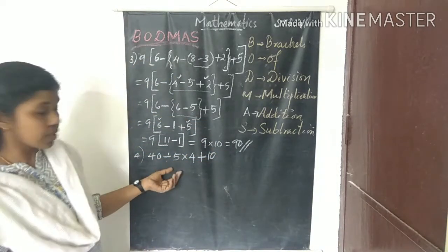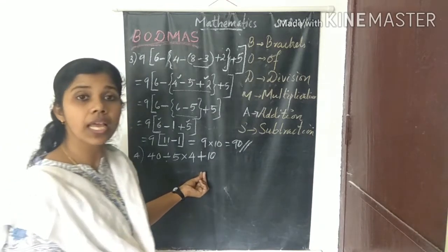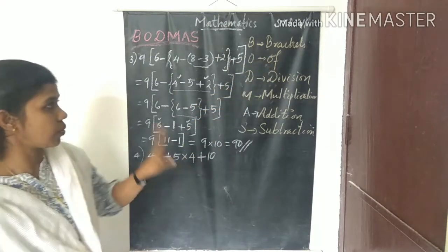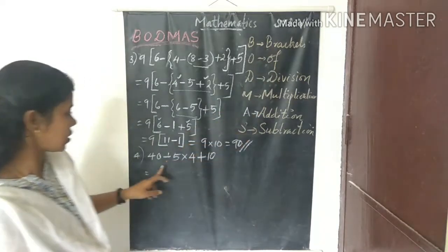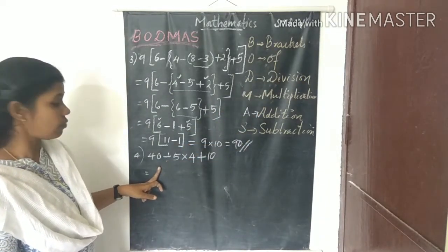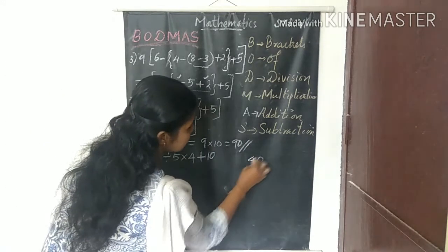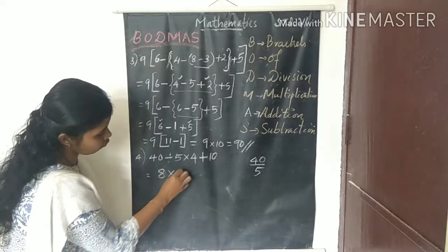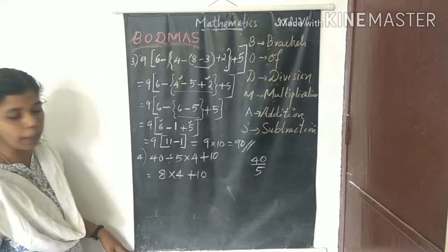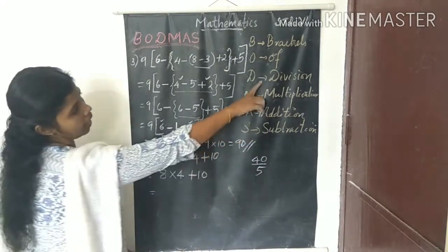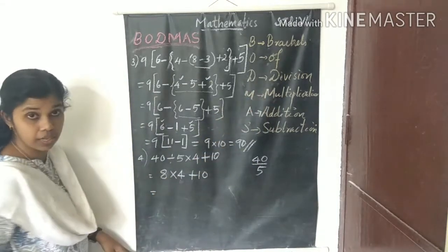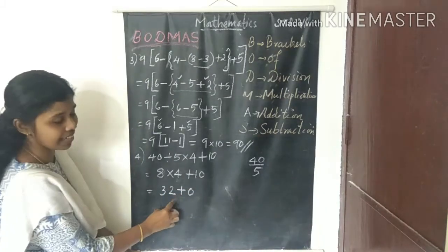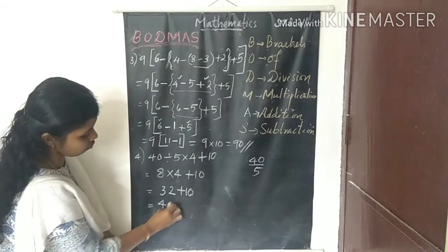Next question has division, multiplication, and addition. No brackets, no 'of' function. So first do division: 40 ÷ 5 equals 8. Next, multiplication: 8 × 4 equals 32. Then addition: 32 plus 10 equals 42. Wait — answer is 32 plus 10, that is 42. Answer is 42.